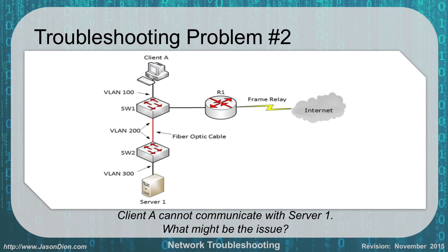Problem 2: Client A cannot communicate with Server 1. Looking at the topology, we have VLAN 1 at the top, VLAN 2 in the middle, and VLAN 3 at the bottom. The problem is that traffic is not going through a router. Going from Client A to Server 1 across different VLANs (100, 200, and 300), you need a router between Switch 1 and Switch 2 to route traffic between them. On the Network+ exam, unless told otherwise, assume a switch is a layer 2 switch — VLANs require a router.